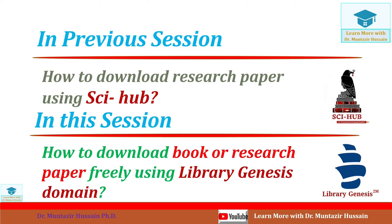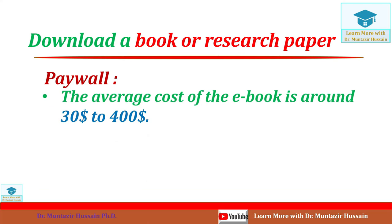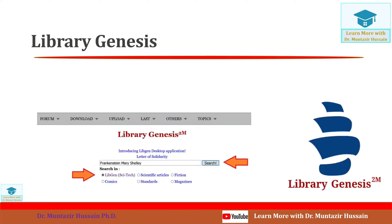Whenever you want to download a book — what we mostly call an ebook or electronic book — or any research paper, you have to pay a certain amount of money. For example, the average cost of an ebook is around $30 to $400, and similarly the average cost of a scientific research paper is around $30 to $40. In today's session I will show you how to download these freely from Library Genesis.